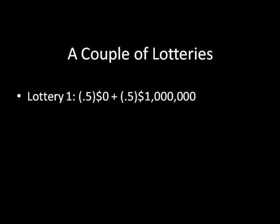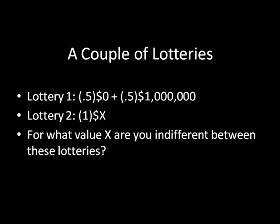Here's lottery one. In this you win zero dollars half the time and you win a million dollars the other half of the time. And lottery two is just you win X number of dollars guaranteed. So this is a degenerate lottery where the outcome is that you win X dollars. My question to you is: for what value X are you indifferent between these two lotteries? In other words, if I was about to say we're going to play lottery one, or I could just write you a check for some number of dollars, at what dollar value is that check going to be that would make you indifferent between taking that check and playing that first lottery?